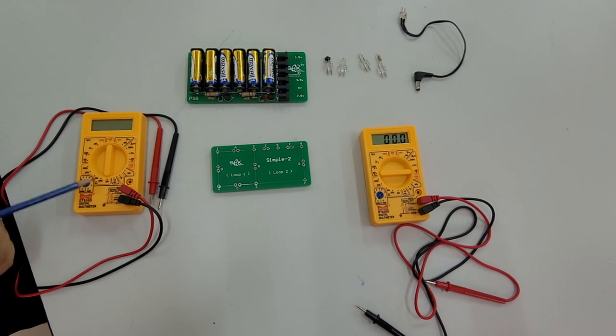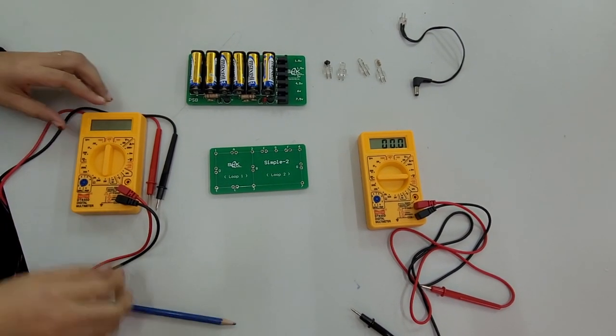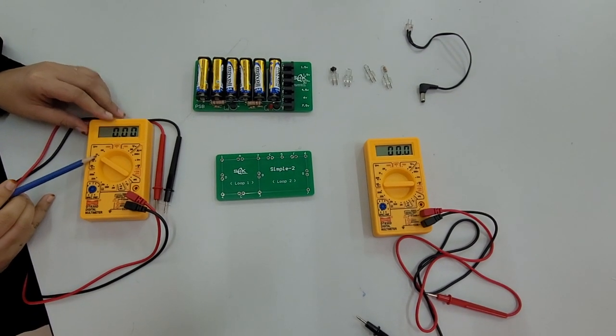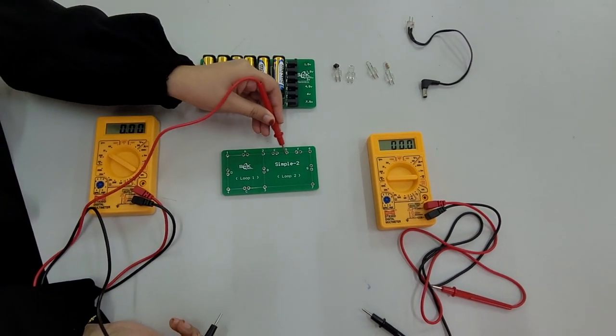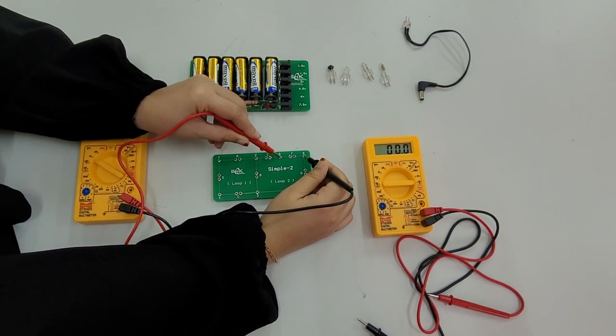The second DMM is turned on and set to DCV mode, range 20V, and insert the DMM probes at points 5 and 6 to measure the voltage across the resistor.